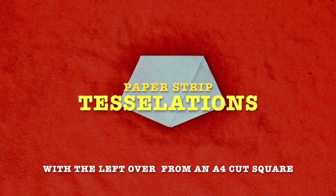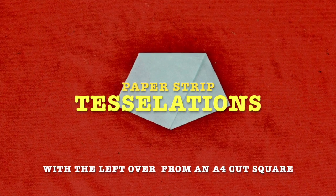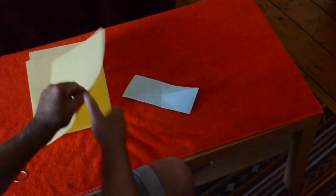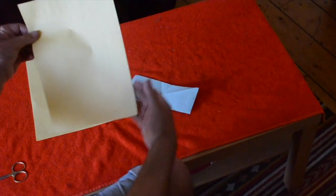This is how to make patterns with a special shape. This is a paper shape that comes from cutting part of an A4 sheet.